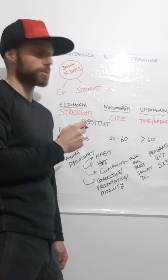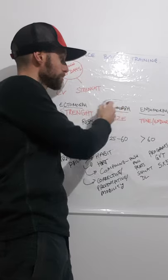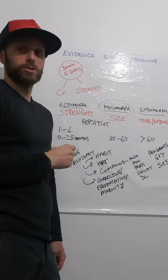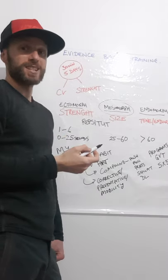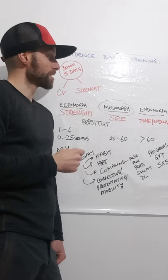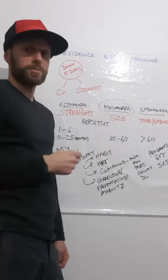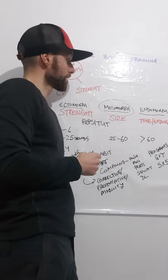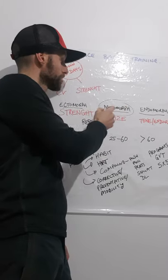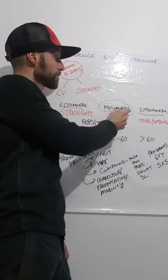Mesomorph is someone who puts on muscle easily, maybe a swimmer's body type. These two don't tend to put on fat as easily.